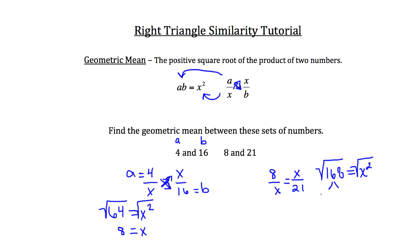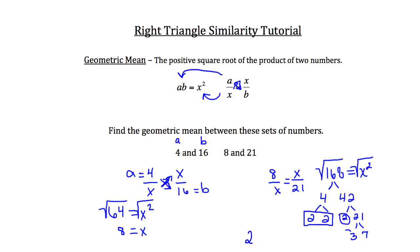I'll break 168 down into 4 and 42. 4 breaks down into 2 and 2, and 42 breaks down into 2 times 21, and 21 breaks down into 3 times 7. Now I see a pair of 2's, so I can take one 2 out from under the radical, and I've got a 2, a 3, and a 7 left. I'll multiply those three numbers together to get 42, and that stays under the square root. So the answer is 2 root 42, which equals x.